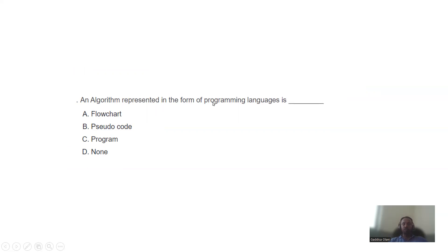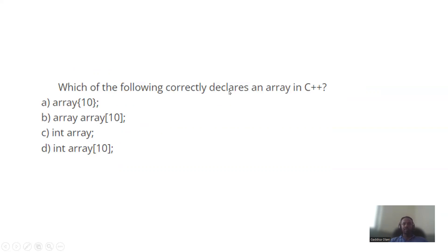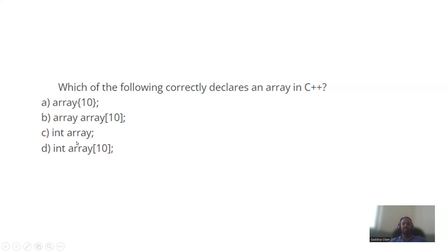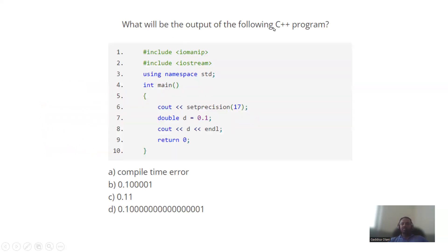An algorithm is represented in the form of programming languages — that's software, also called a program. Now, which of the following correctly declares an array in C++? To declare an array in C++, you need a data type, an array name, and square brackets with the size.